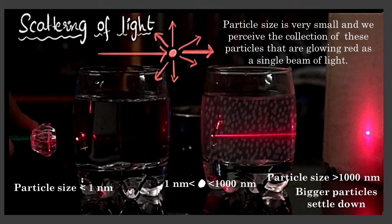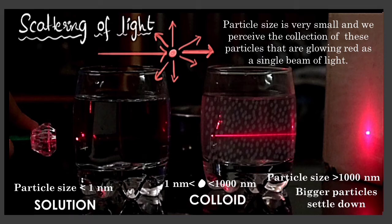Now milk comes under the category of colloid, that is where the particles are regularly suspended throughout the solution. So scattering of light can be seen very prominently in colloidal solutions, whereas solutions and suspensions do not show scattering that much.